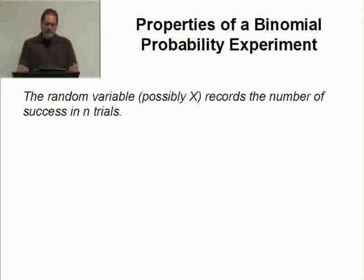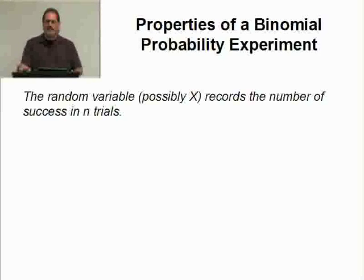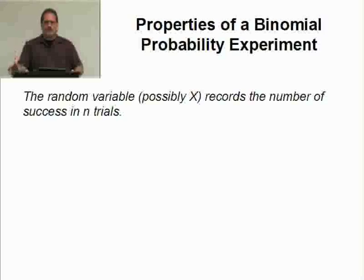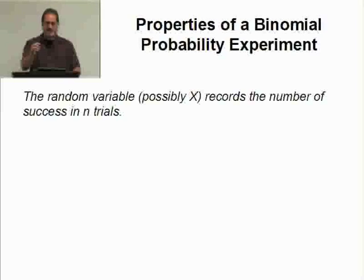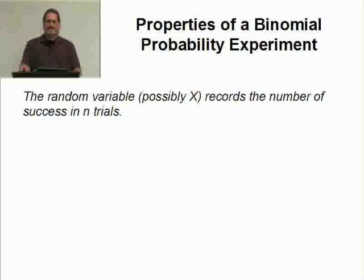The random variable X records the number of successes in n trials. For example, if I'm looking for deaths in a cancer study with 27 people — so n equals 27 — and I'm looking for the number of deaths in the first five years, death is the success. If I observed eight deaths out of 27, then X equals eight. Again, a success is simply what I'm looking for — not necessarily something good or bad.